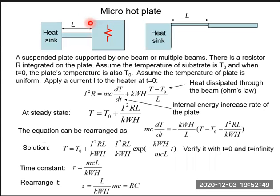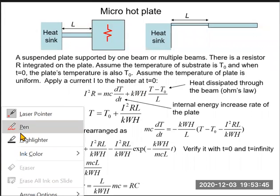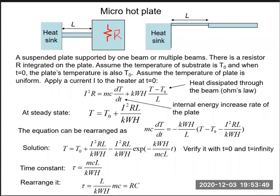Another widely used thermal structure in MEMS is the micro hot plate. A micro hot plate can have a larger heated area than the bridge structure we just discussed. A micro hot plate consists of a suspended plate supported by one beam or multiple beams. For simplicity, this hot plate is supported by a single beam, but it could be multiple beams. There is a resistor R integrated on the plate, and R serves as a heater.